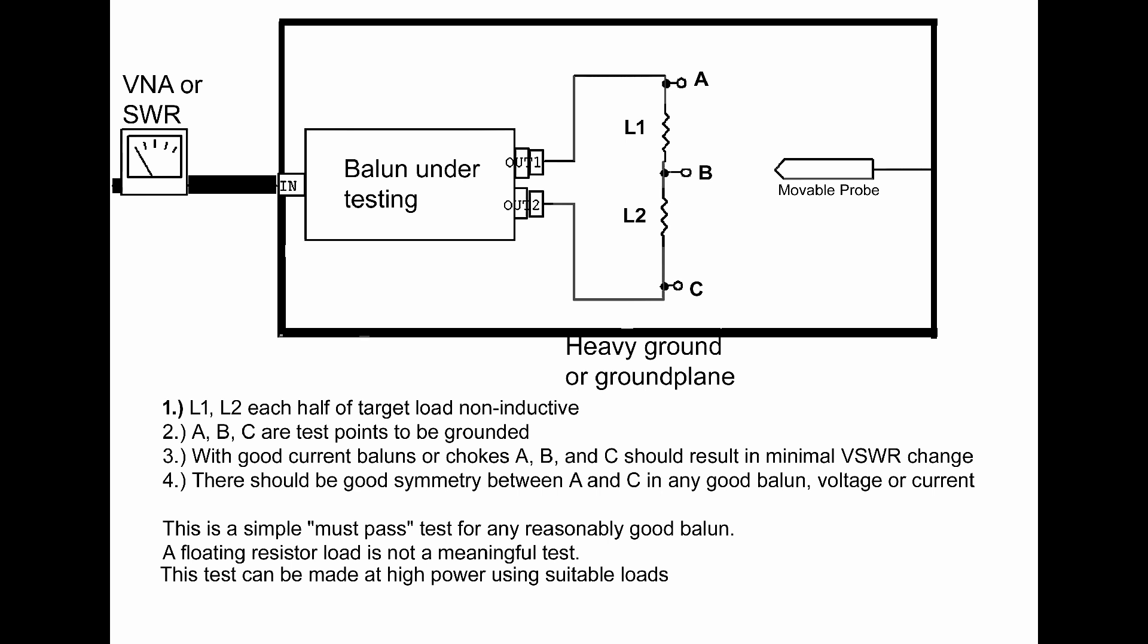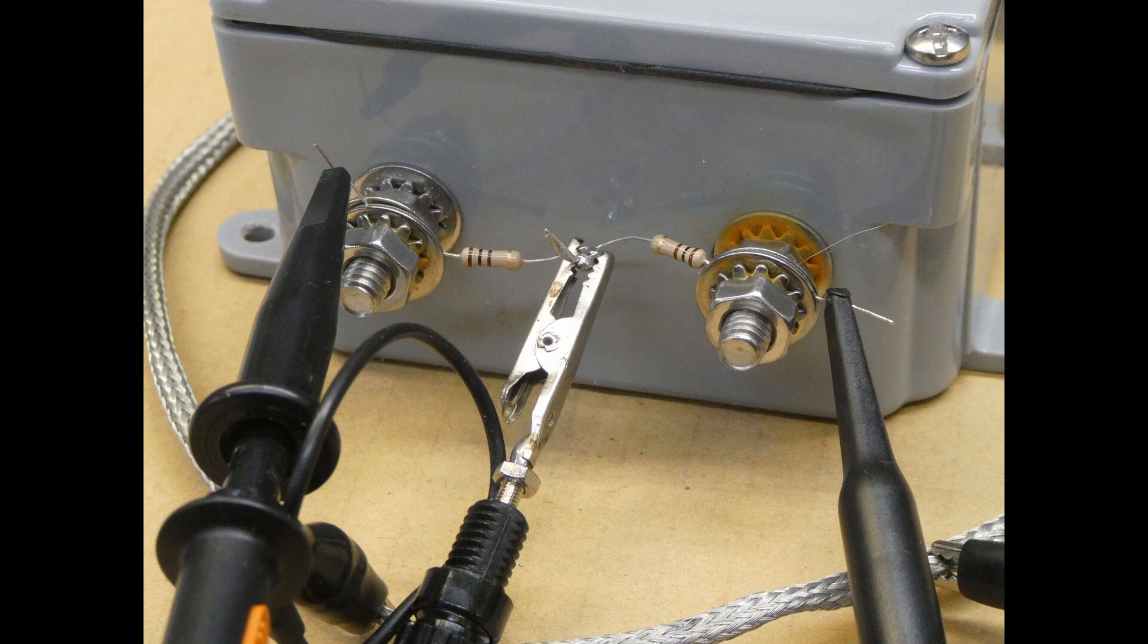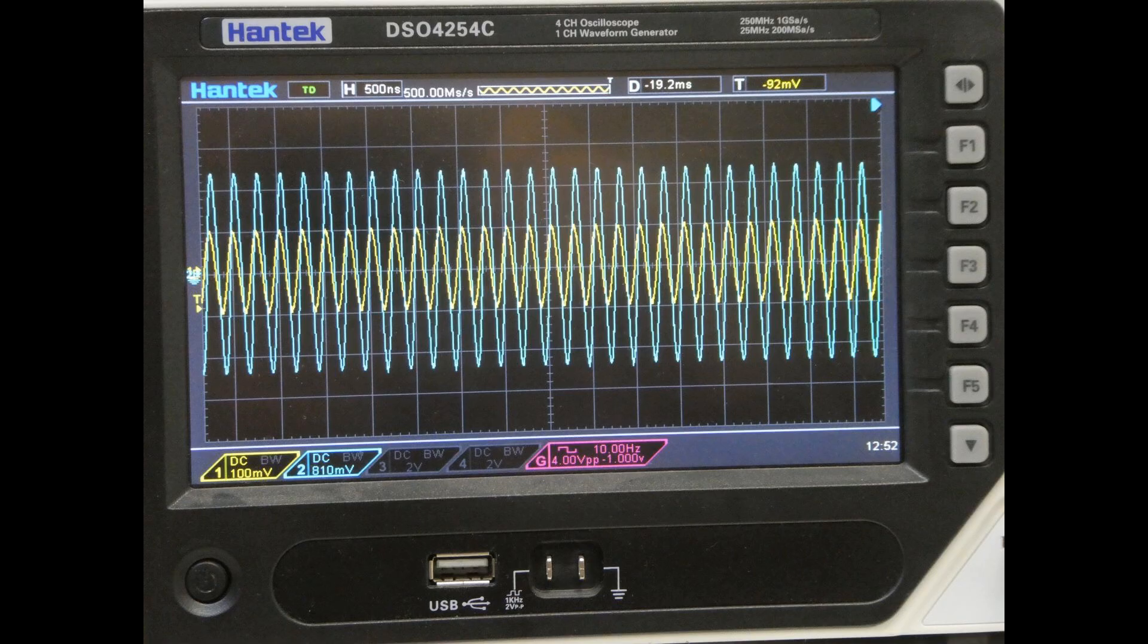If we had a VNA or an SWR meter and a suitable output load and a little test bench where we could test the balun, we could do a simple test and find out without removing the cover if we really have one of these defective baluns. For example, with a pair of 100 ohm resistors and we ground the center tap of the resistors and we use a two-channel scope to look at the output voltage of the balun terminals, we'll see that these defective baluns that are circulating have an unbalanced voltage on each of the two terminals when the voltages should be exactly equal and opposite.